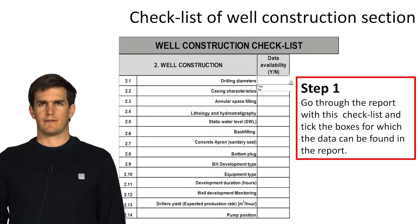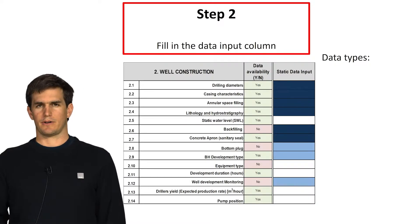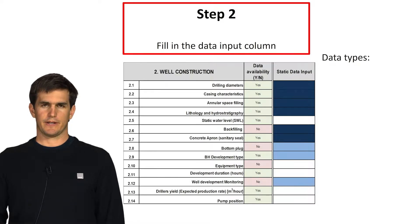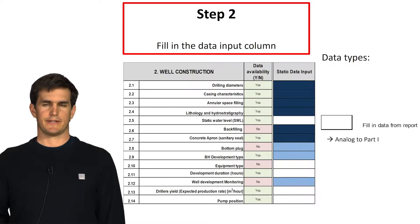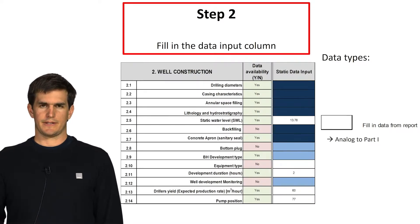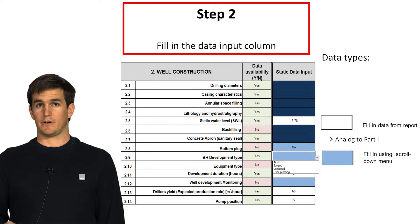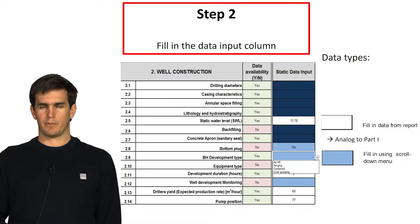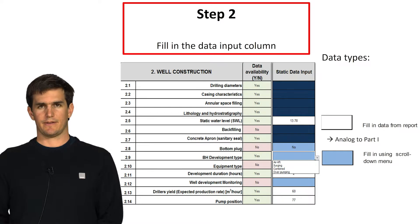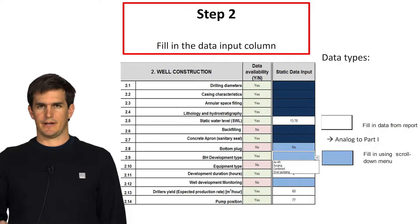Once you have done that, the second step is to input the data. As you can see here, there are three different colors for the input cells. If the cell is white, that means you can input static data manually. In case the cell is in light blue, you use the drop-down list available on that cell, go to the report, see what information is there, find the adequate answer in the drop-down list and input it.